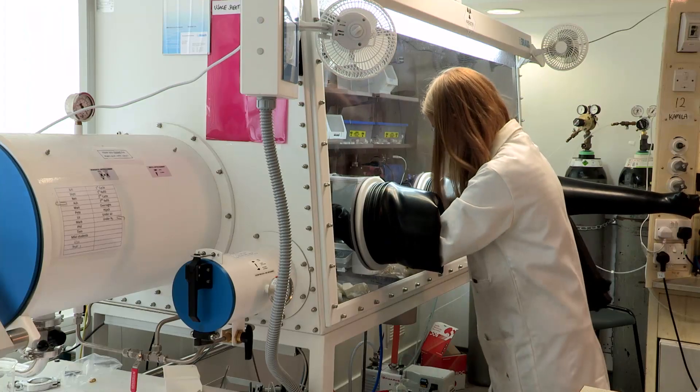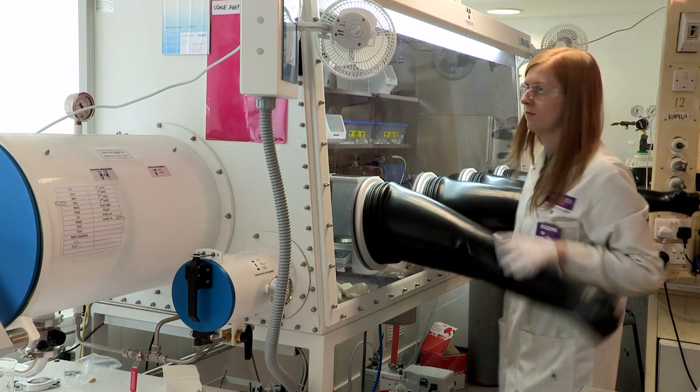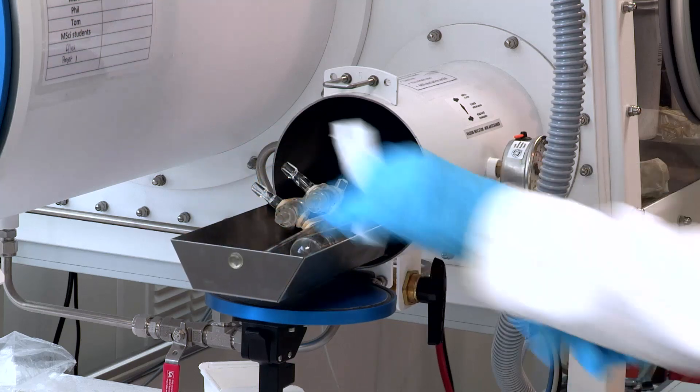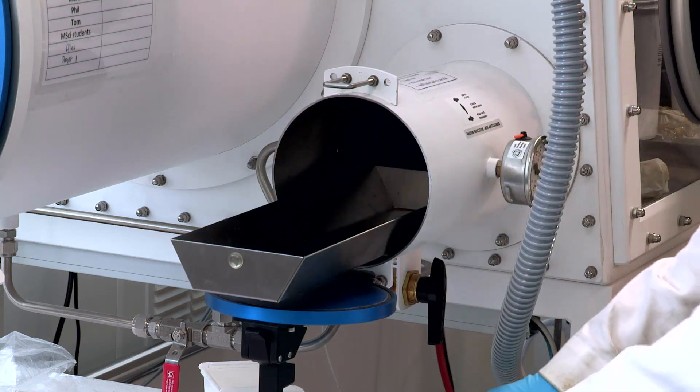The facilities at Manchester mean we have access to the very sensitive compounds that go into this, and we have glove boxes and Schlenk lines that mean we can exclude air from all of our reactions to make sure that these compounds don't go off in the process and that we can isolate them cleanly and have a real look at them.